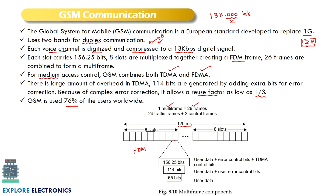In one slot you can observe 156.25 bits, which consists of user data, error control bits, and TDMA control bits. Out of these 156.25 bits, 114 are user data and error control bits. Out of those 114, 65 are user data. This is how one slot is composed, and 8 such slots are grouped together using frequency division multiplexing.